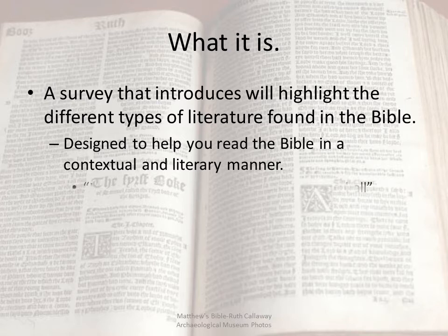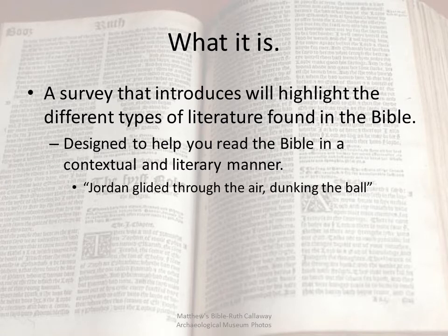Context is very important in understanding what a passage or phrase means. If we take a phrase out of context, I can give you a demonstration. Take the phrase: 'Jordan glided through the air, dunking the ball.' If you were from outer space and had no context, only an English dictionary, you'd start translating. You'd recognize Jordan could be a nation, a river, the Jordan River Rift Valley, or a name for an individual — male or female — so it's either a place or a person. Then the phrase 'glided through the air' helps you realize a place doesn't glide, so it has to be a person.